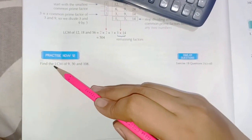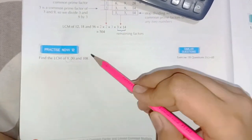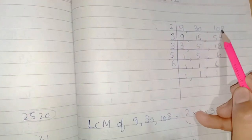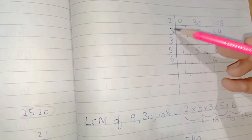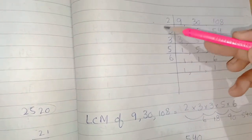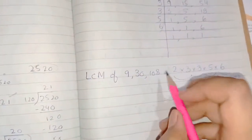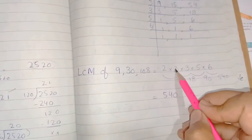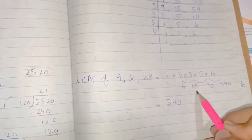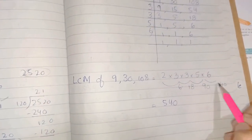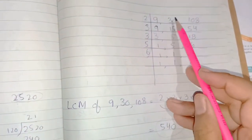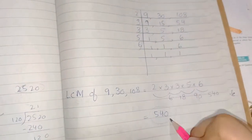Practice 12: find the LCM of 9, 30, and 108. Writing the prime factors, we multiply all the numbers: 2 × 3 = 6, 6 × 3 = 18, 18 × 5 = 90, 90 × 6 = 540. So the LCM of 9, 30, and 108 is 540.